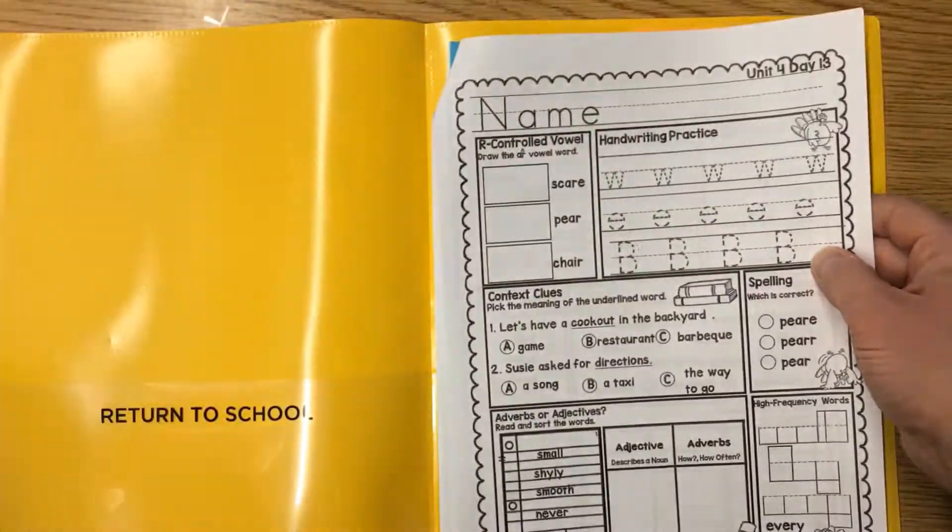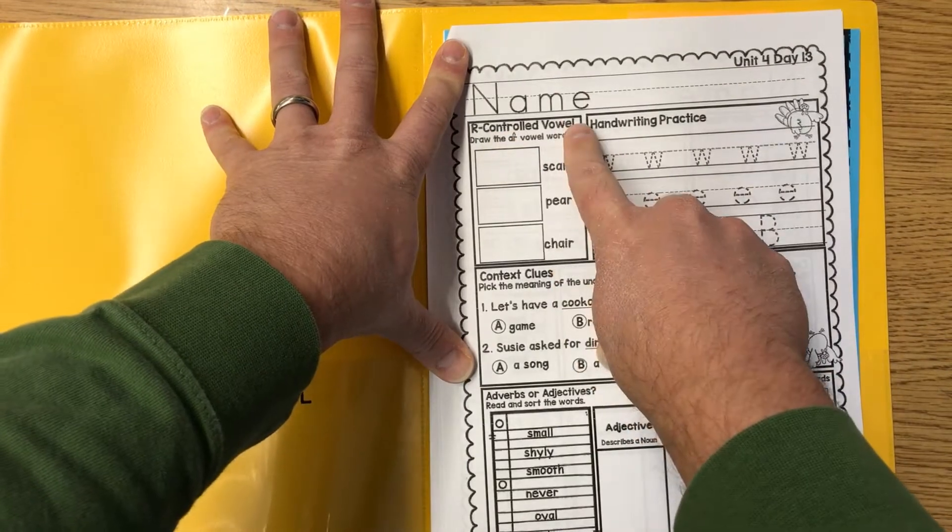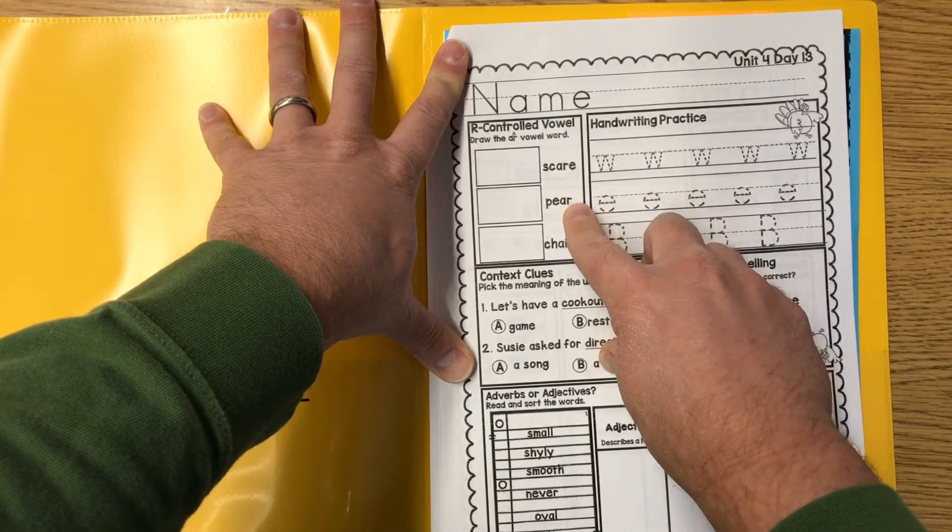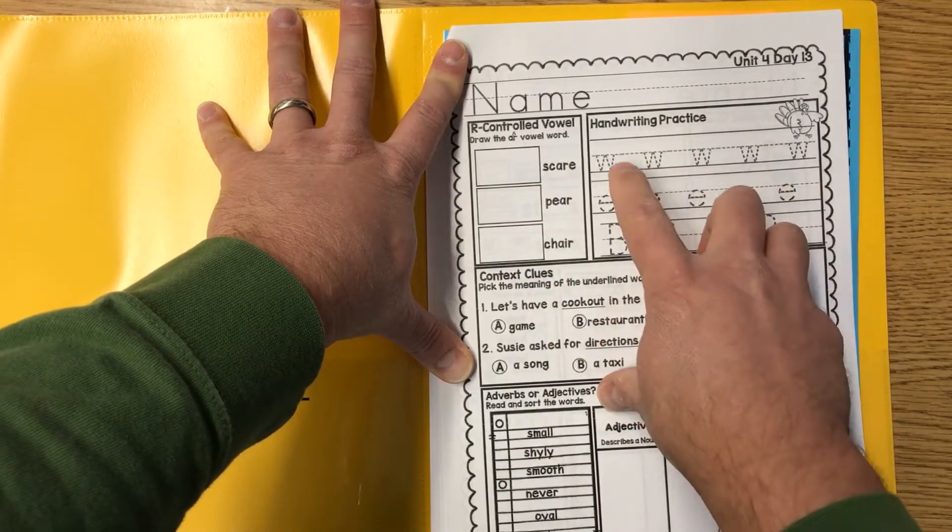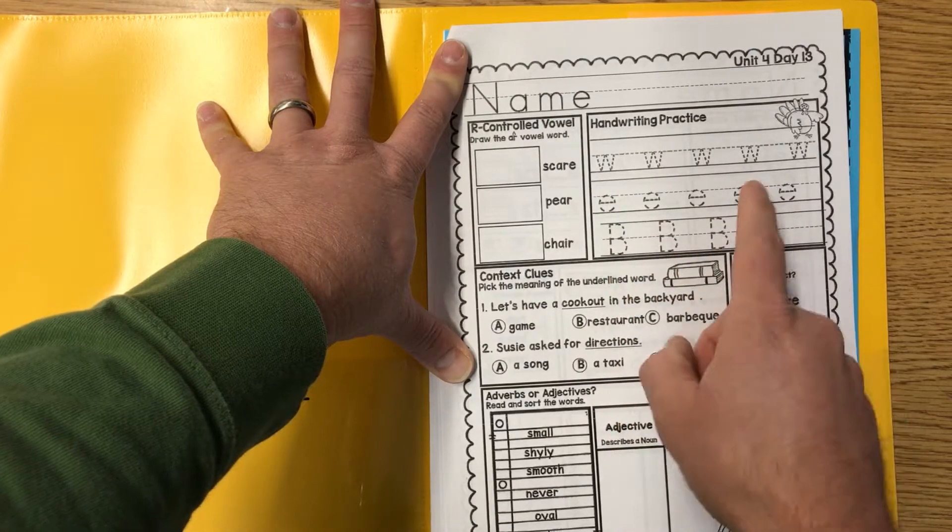We're gonna work on 13 and 14 today. Here we go, name goes on the line. R controlled vowel, write the R vowel word. Scare, pair and chair. Handwriting practice, lowercase w and e. Don't forget, capital B, trace them neatly.